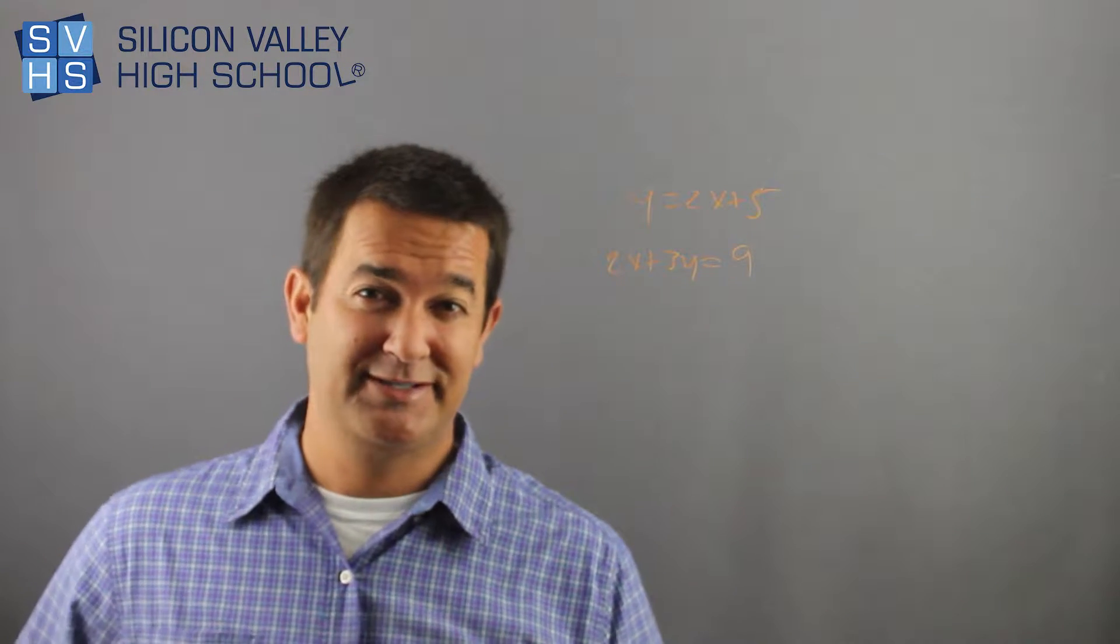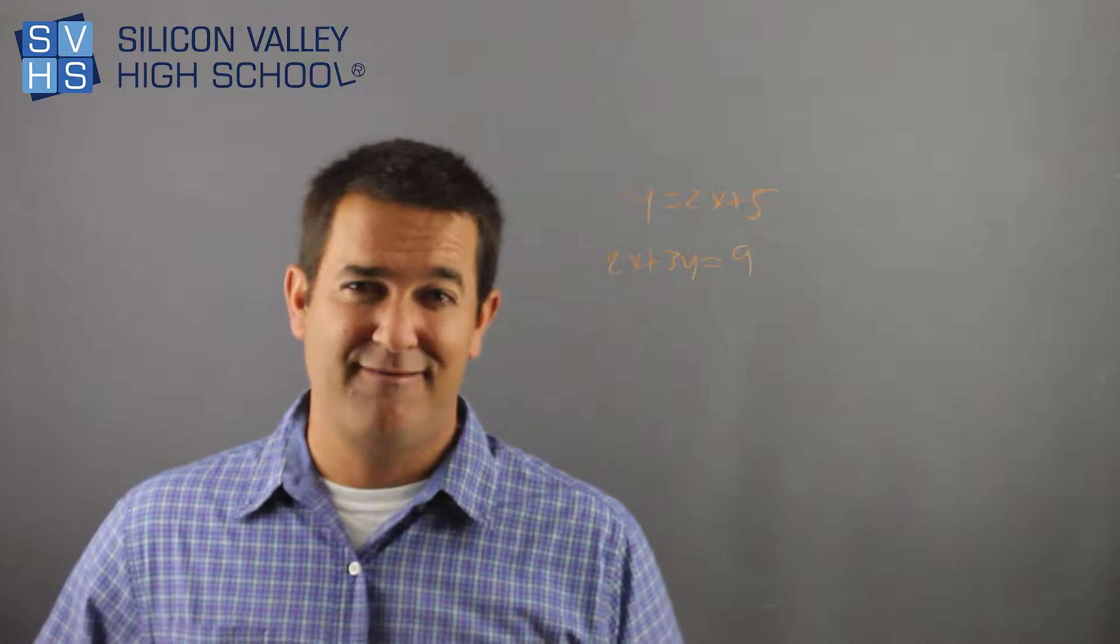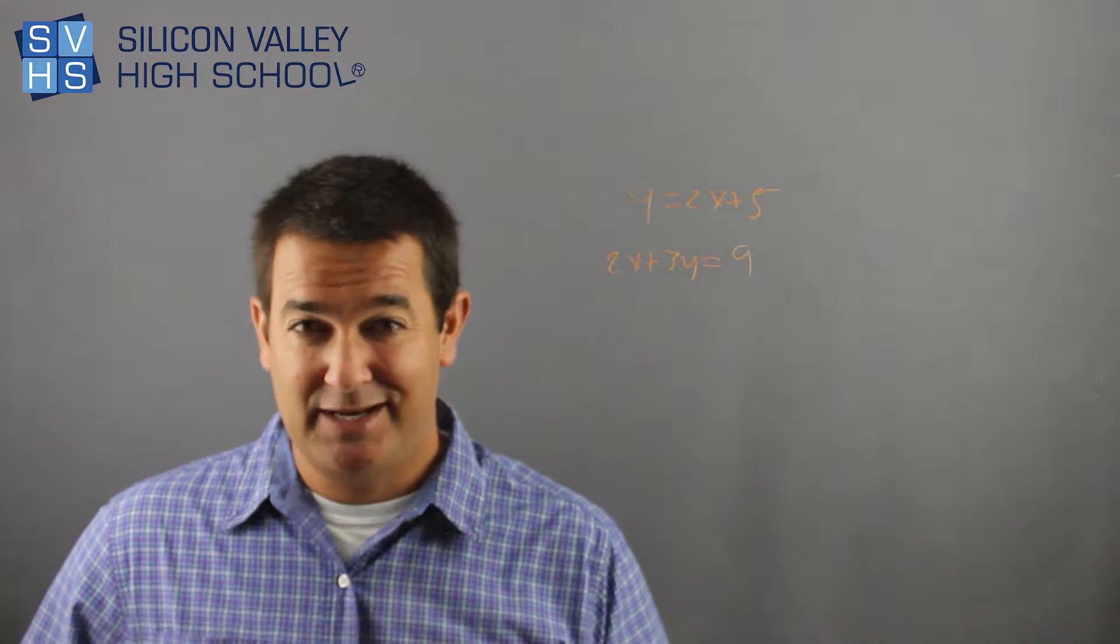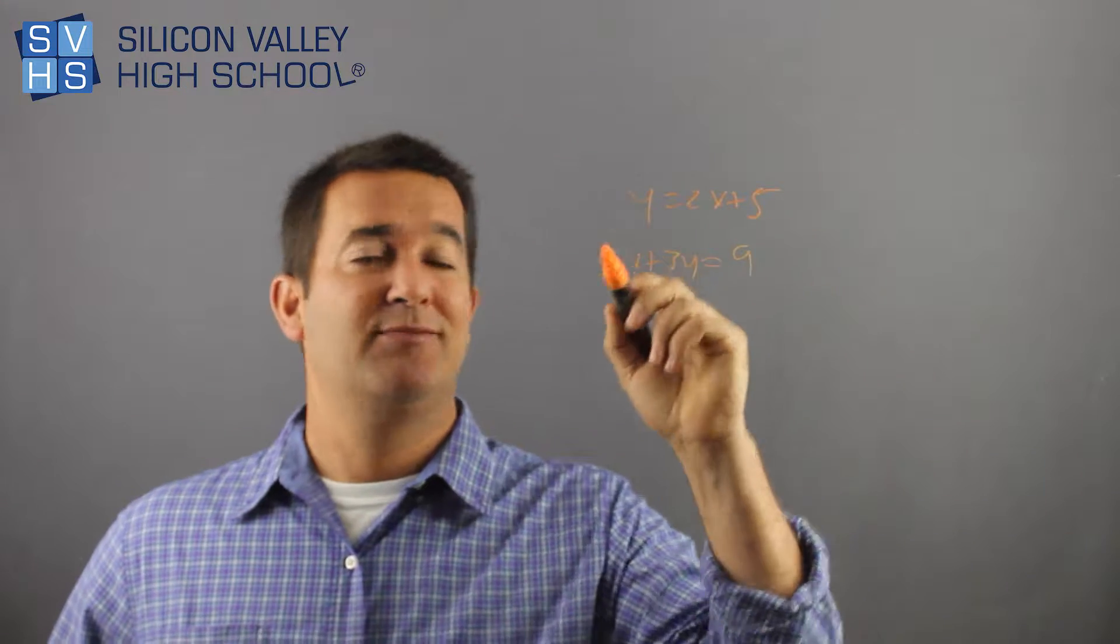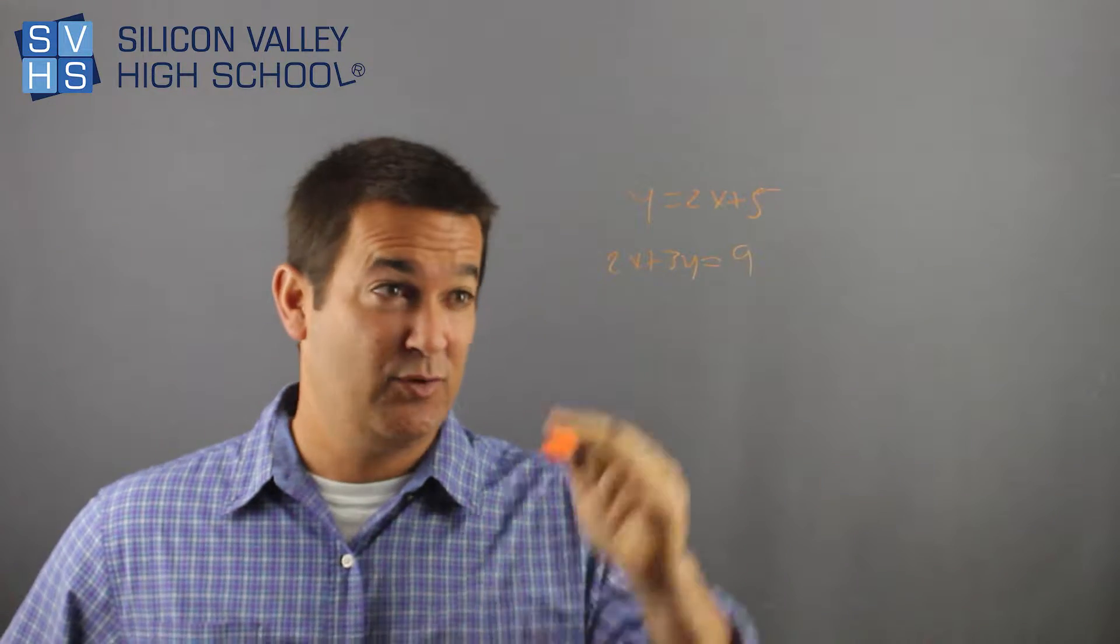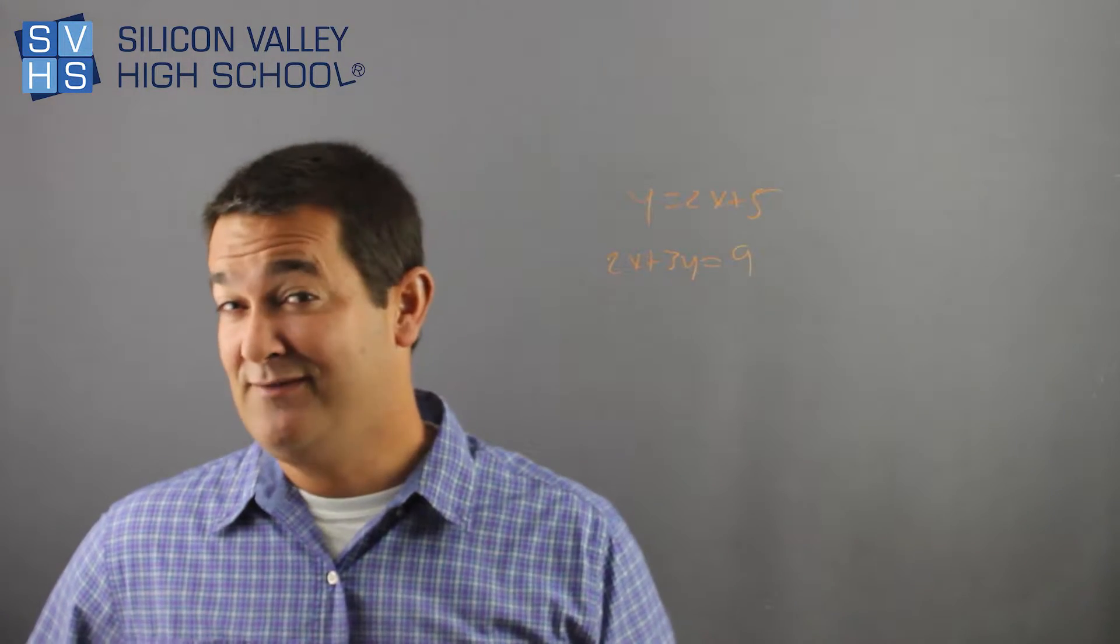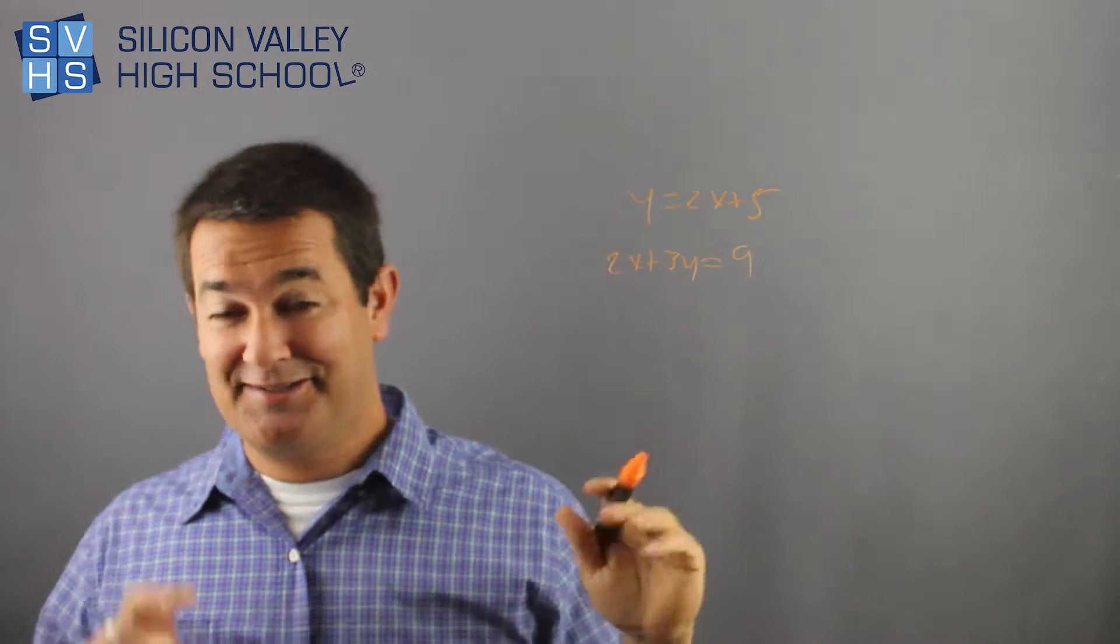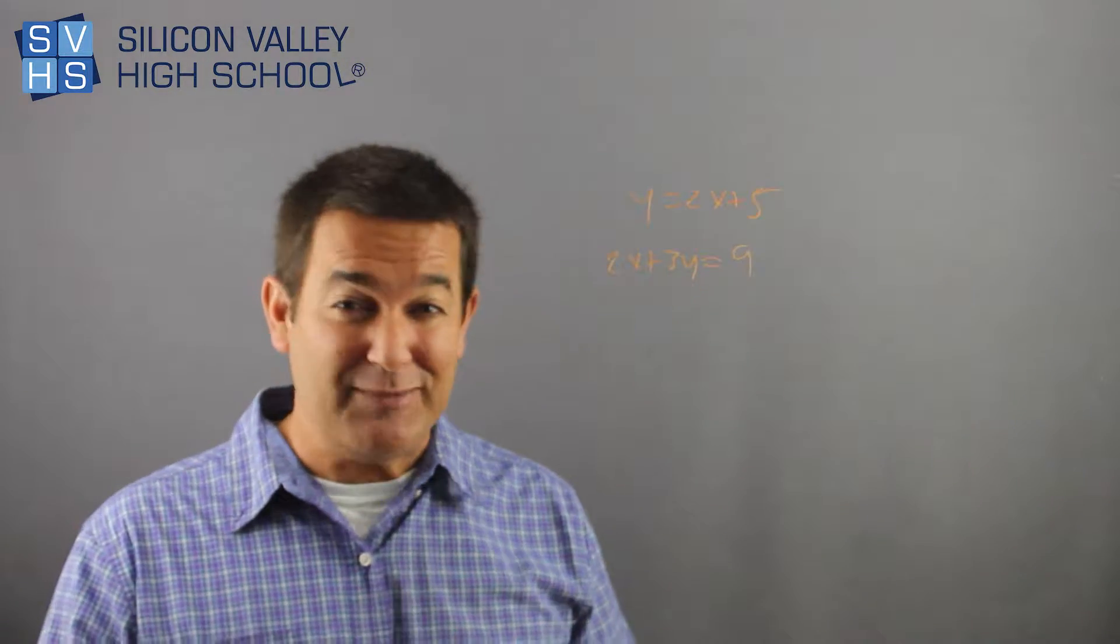And by the way, since we're having a nerd discussion, the number of variables you have, in order to solve for them, you have to have that many equations. So if you have two variables, x and y, you have to have two equations to solve for it. If you had three variables, x, y, and z, you would need three equations. That was just a little aside, a little freebie.